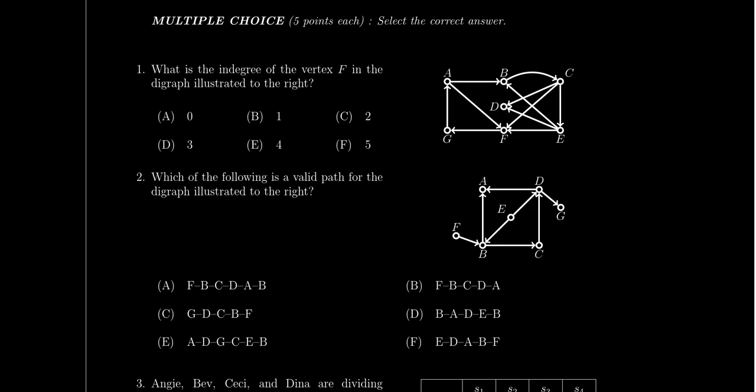Question one is a general digraph question — no projects involved, just vocabulary and terminology. You may be asked to compute the in-degree of a vertex (the number of arcs entering it), or the out-degree (arcs leaving it). We also discuss incidence — since direction matters in digraphs, we use 'incident' rather than 'adjacent.' Be familiar with digraph vocabulary: arcs, in-degree, out-degree, and incidence. This material comes from lesson 10.